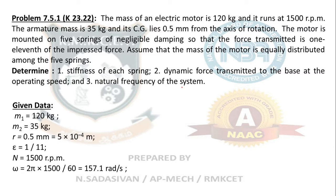Let me list down the given data. I am going to take this dead load of the entire motor as m1 = 120 kg and the rotating mass of the motor armature as m2 = 35 kg. Radius eccentricity is 0.5 mm, so 5 × 10^-4 meter. Epsilon is 1/11, rotating at 1500 rpm. Find the omega, it comes to 157.1 radians per second.